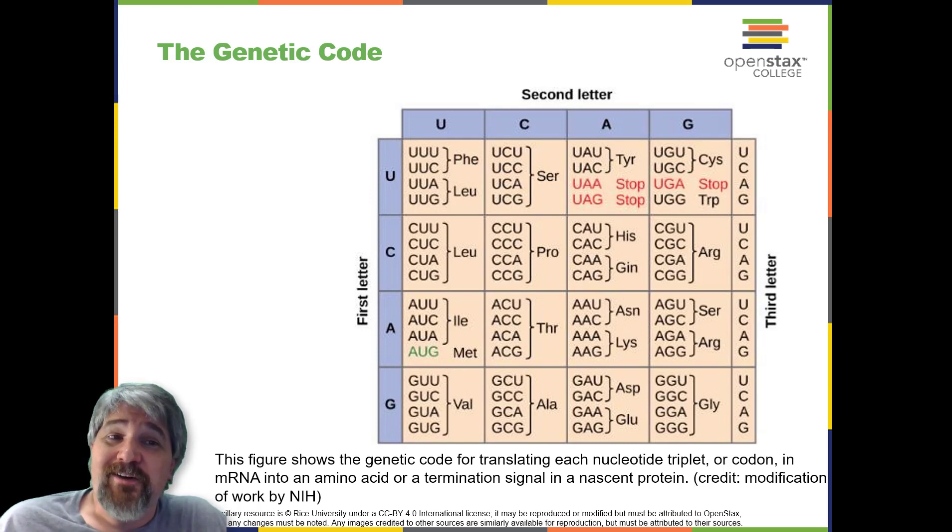Each amino acid is defined by a three-nucleotide sequence called the triplet codon. The relationship between a nucleotide codon and its corresponding amino acid is called the genetic code.